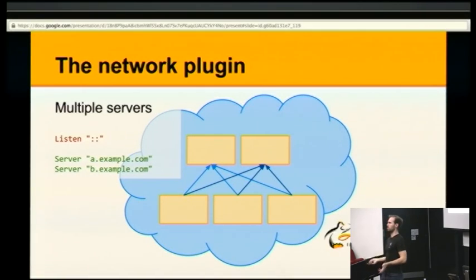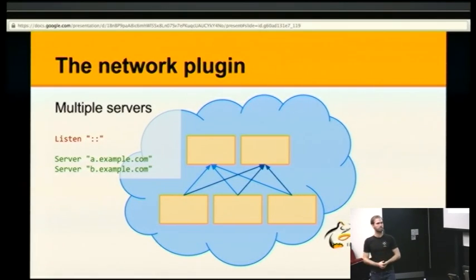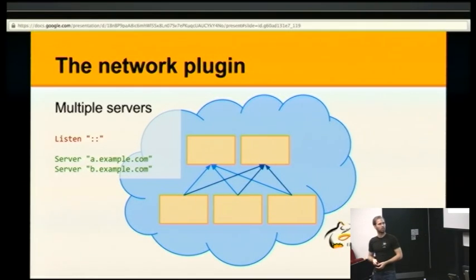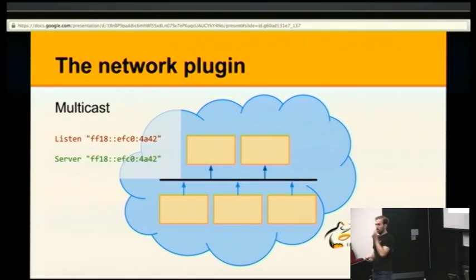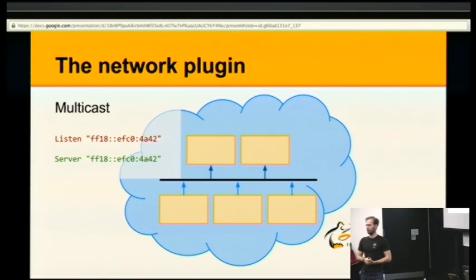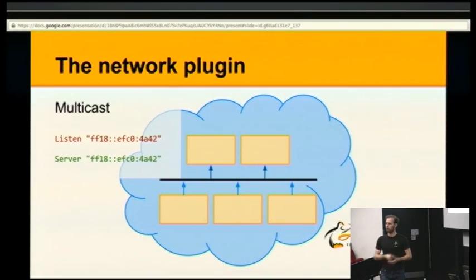If you have two servers for fault tolerance reasons, you simply add a second server line and you get a setup where every client is sending out the metrics twice — once to the A server, once to the B server. If you want to set up multicast, all you have to do is drop in a multicast address, and the server will automatically detect that this is a multicast address, send the correct IGMP join packets, and if your network does the right thing, you're all good to go.